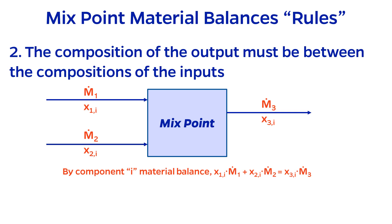x1i times m1 plus x2i times m2 equals x3i times m3. Since m3 equals m1 plus m2 by a material balance, we can simplify the material balance to the expression shown on the screen now.